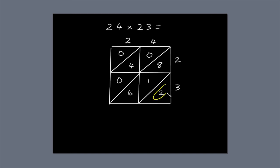Next, add up the numbers along the diagonals. 2. 8 plus 1 plus 6 is 15.